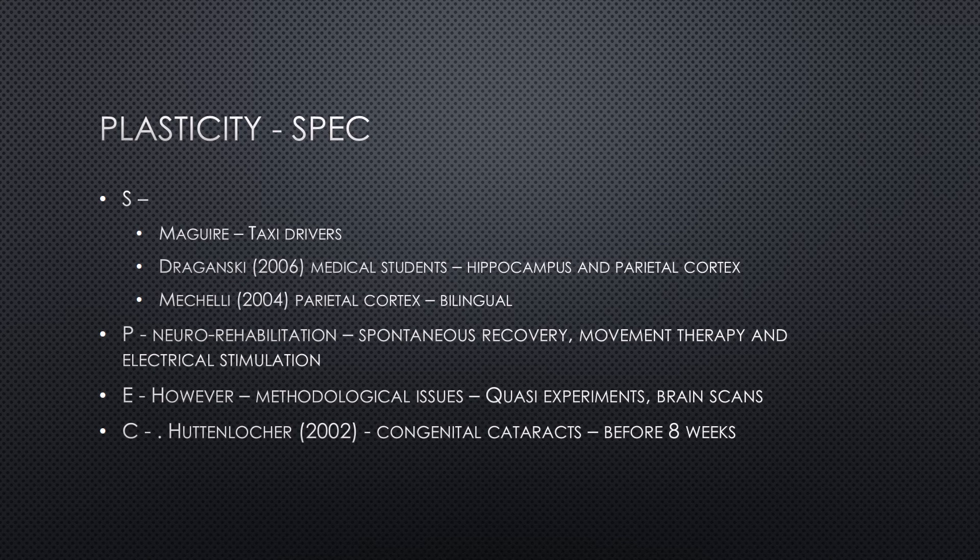However, there are methodological issues with all of the research conducted into plasticity. If you look at all of the above, they're all quasi-experiments — taxi drivers, medical students, and people who are bilingual — with no random allocation, so there are issues with confounding variables. Particularly for the taxi drivers study, people who want to be taxi drivers might naturally have a stronger or enlarged hippocampus leading them towards that role, so we may be studying a pre-existing difference rather than one developed through environment. A lot of the methodological issues also rely on brain scans, particularly fMRIs, so you could talk about the problems with fMRIs.